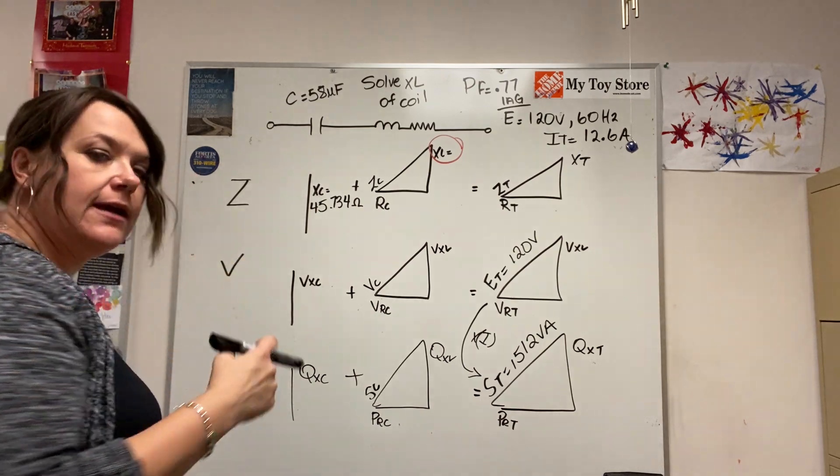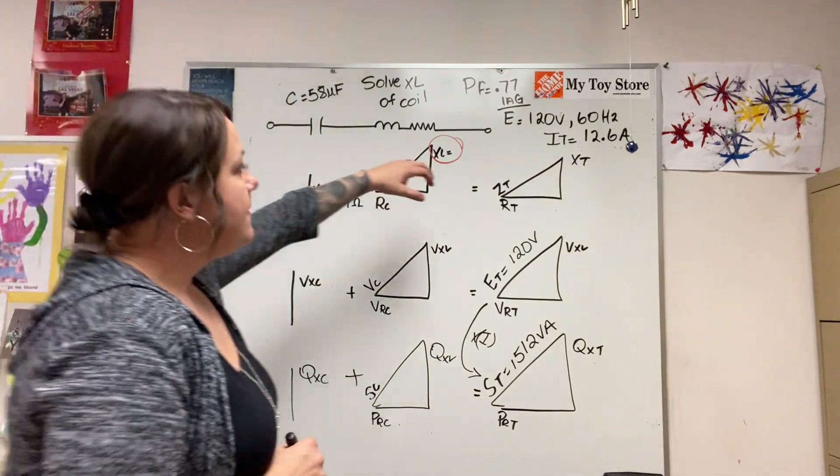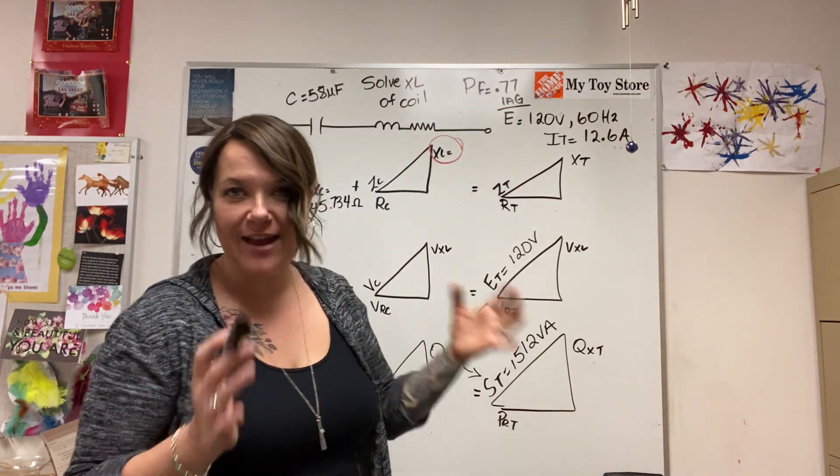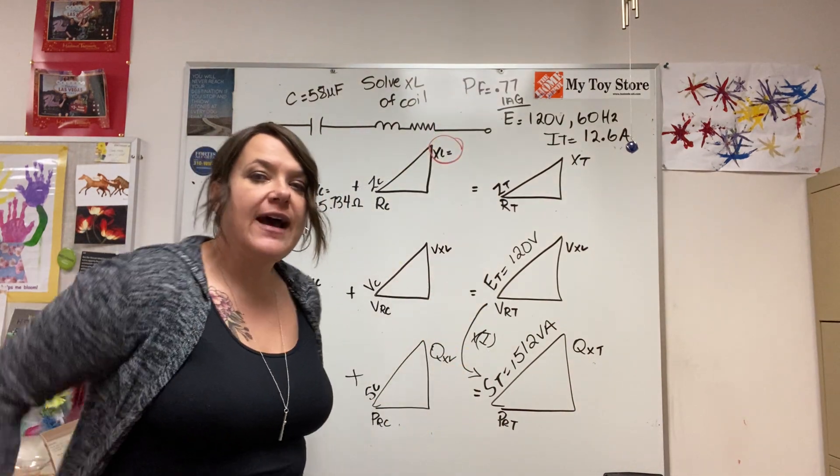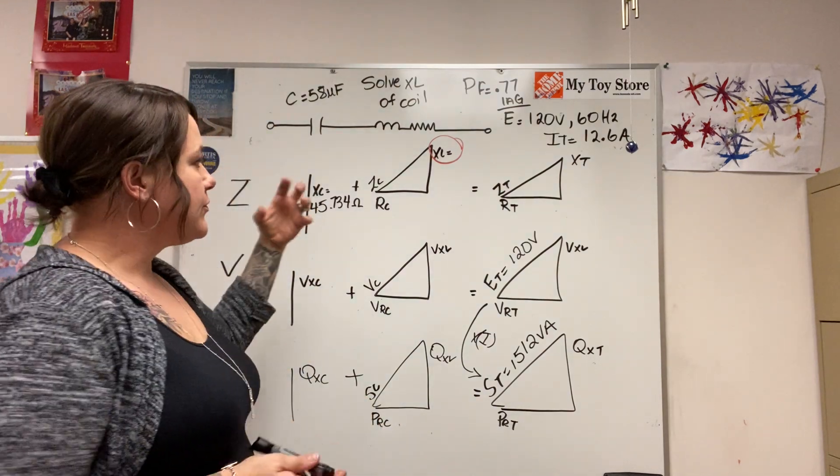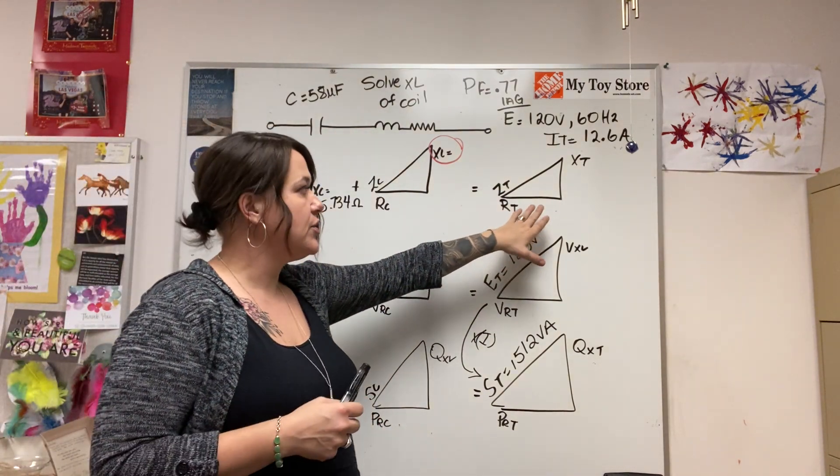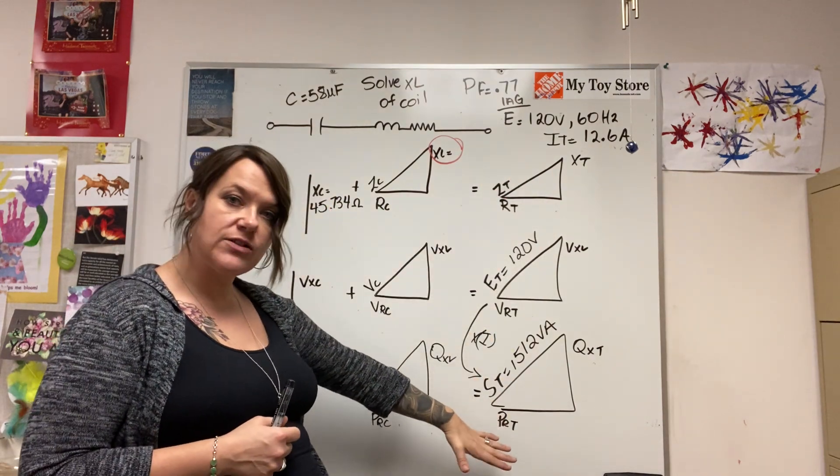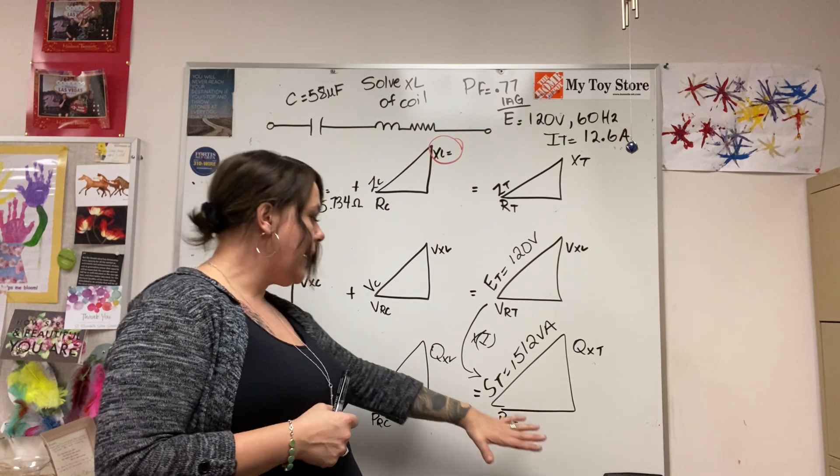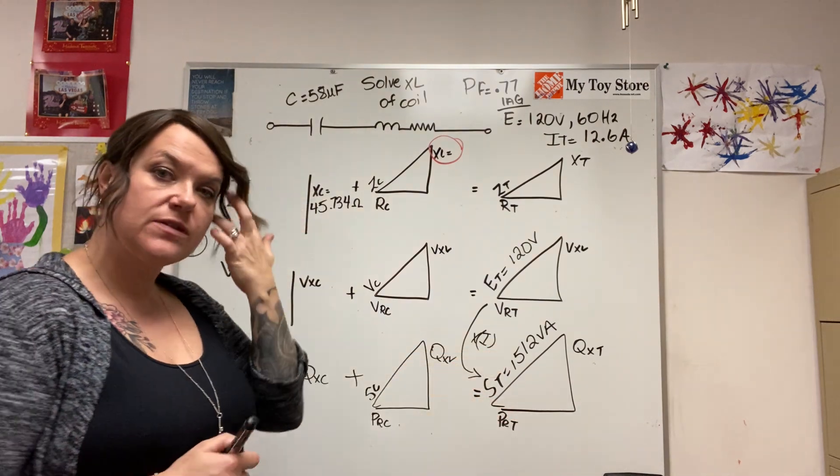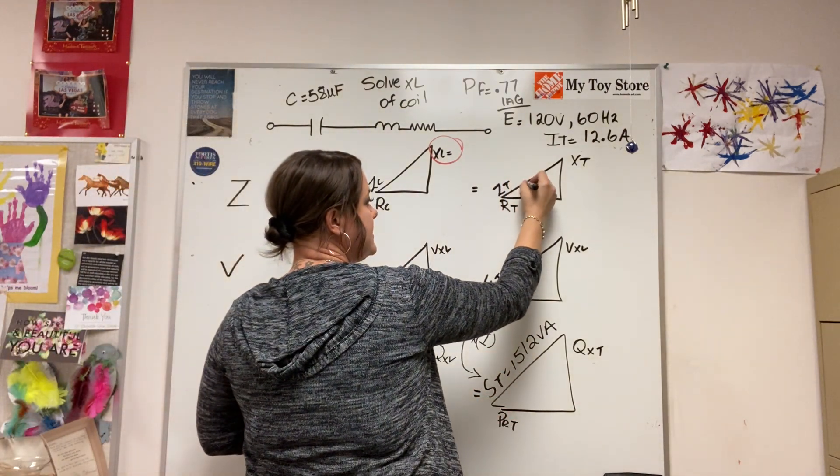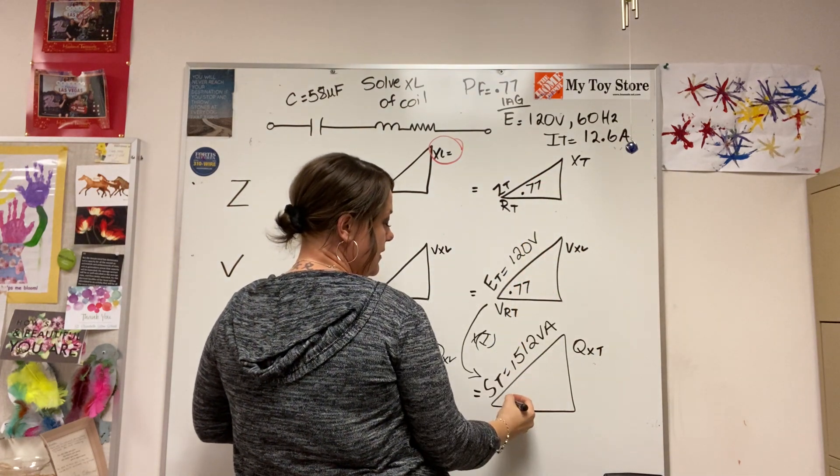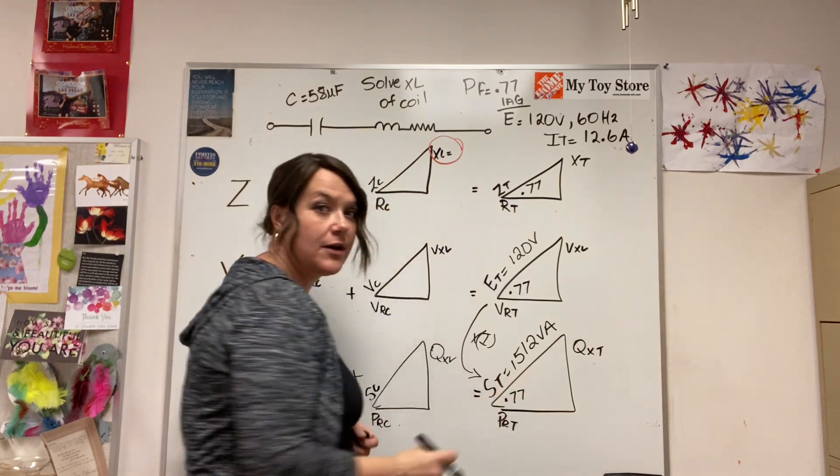I'm almost forgetting a very important piece of the puzzle here. They told me that my circuit power factor was 0.77. Power factor is the relationship between your cosine, essentially your adjacent and your hypotenuse, or it's the vectorial sum of true power and apparent power for the circuit. So if I have a 0.77 lag here, that power factor is very important information.